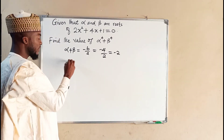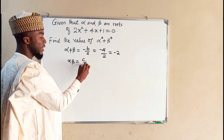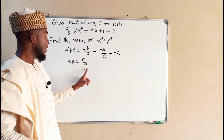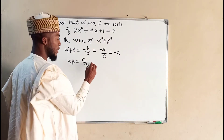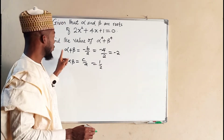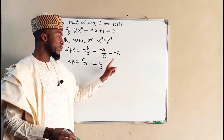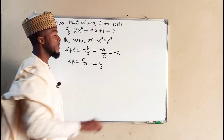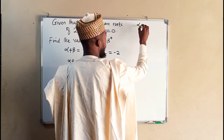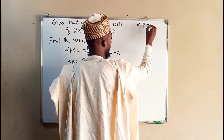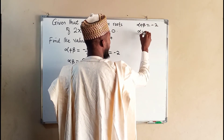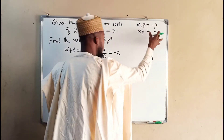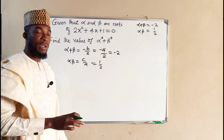And the product, which is alpha times beta, is equal to c over a. Where c is the constant and a is the leading coefficient. So we have 1 over 2. And the sum and the products are negative 2 and 1 over 2 respectively. Hence, let us keep these two values aside. We have the sum to be equal to negative 2, and we have the product to be equal to 1 over 2. And we are going to use these values in finding the solution for this problem.